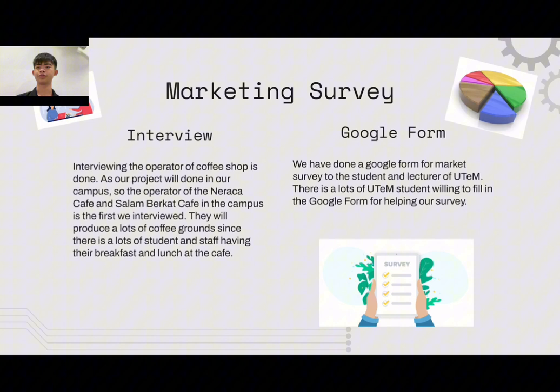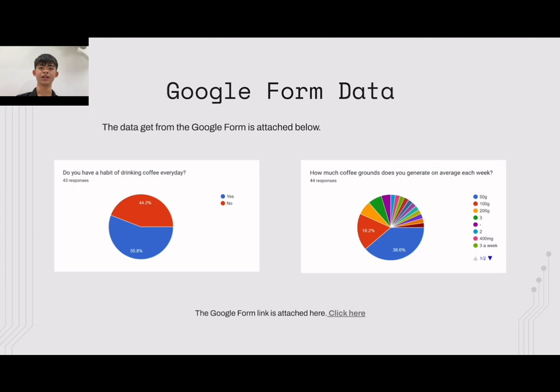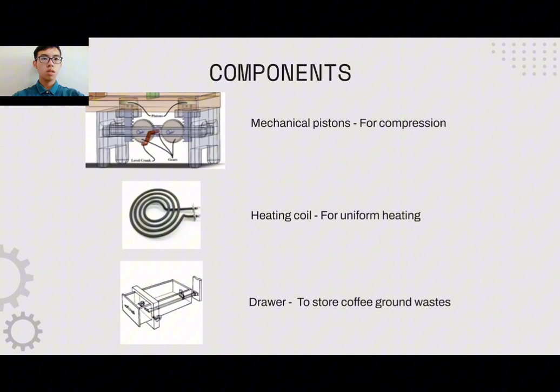If there were a product to help them compost it, they would be willing to recycle it. We also asked for their opinion on the characteristics of the product to help them dispose of the coffee grounds. They prefer a product that is easy to use. Data from the Google Forms shows that fewer students have a habit of drinking coffee and would produce less coffee grounds, so the product is more suitable for cafe operators.